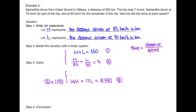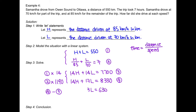To use elimination we need one variable with the same coefficient, so we multiply equation 1 by 14 to get equation 3. Since both equations have positive 14H, we subtract: equation 4 minus equation 3 gives 3L equals 630, so L equals 210. Substituting L equals 210 back into equation 1 gives H equals 340.